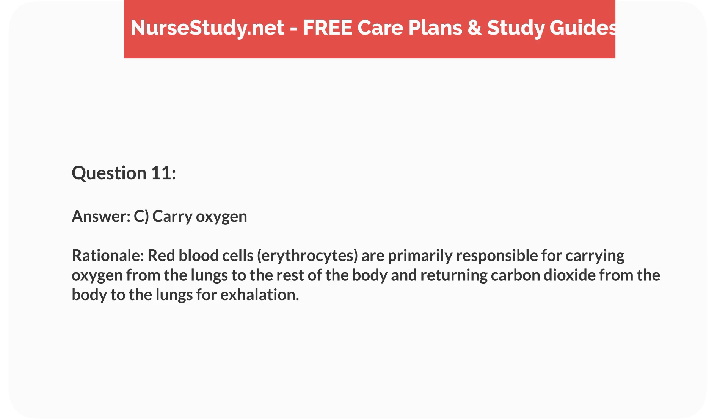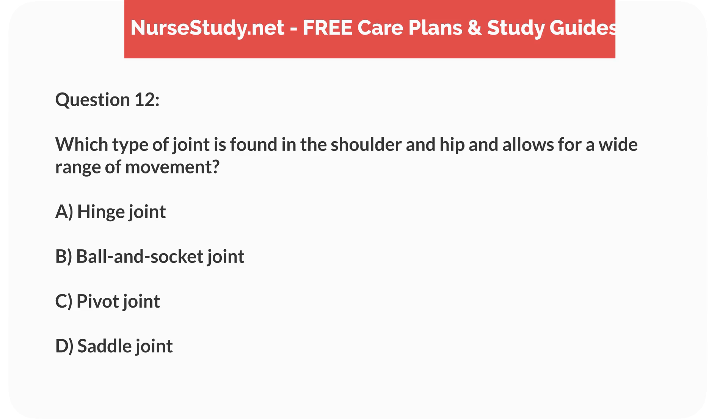Rationale: Red blood cells (erythrocytes) are primarily responsible for carrying oxygen from the lungs to the rest of the body and returning carbon dioxide from the body to the lungs for exhalation. Question 12: Which type of joint is found in the shoulder and hip and allows for a wide range of movement?